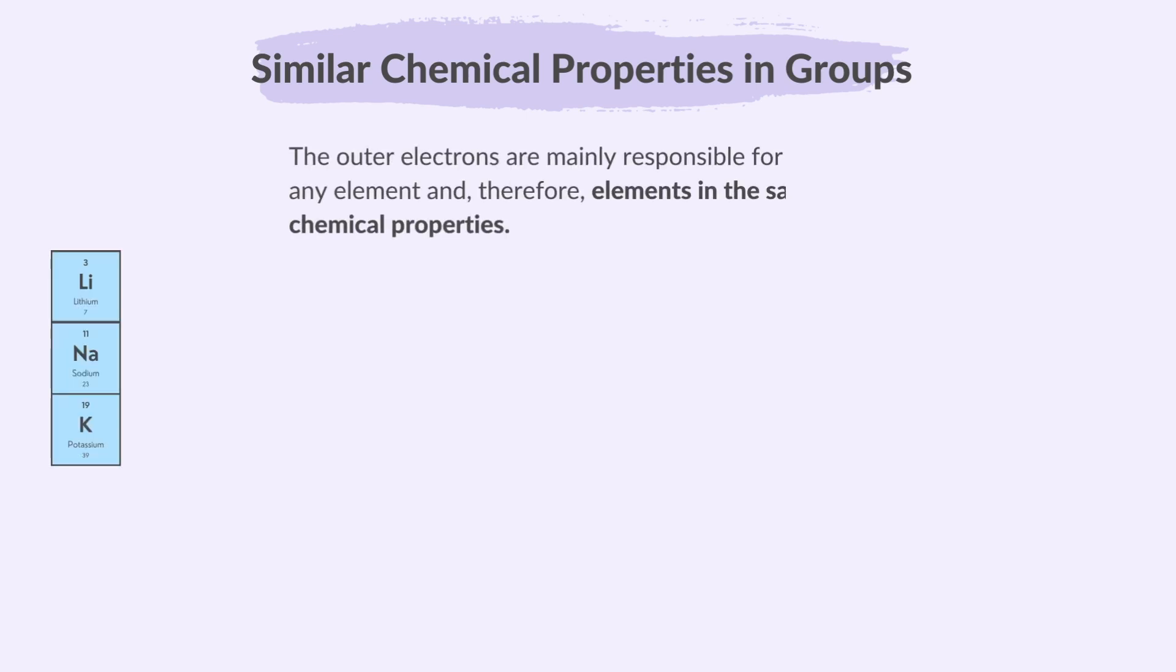Next, similar properties in group elements. The outer electrons are mainly responsible for the chemical properties of any element and therefore elements in the same group have similar chemical properties.